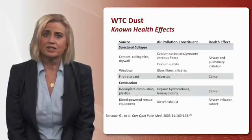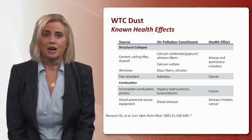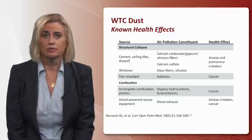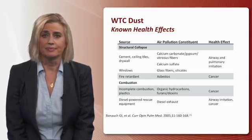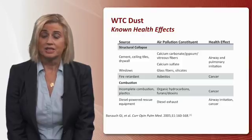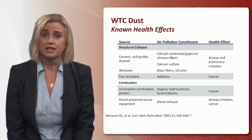The World Trade Center dust had several constituents that have led to many of the health effects we'll be discussing. There were a variety of compounds from the structural collapse — from the cement, ceiling tiles, drywall, windows, fire retardant, combustion products, and diesel-powered rescue equipment. Many of these constituents led to different compounds, such as calcium carbonate, gypsum, asbestos, glass fibers, silicates, hydrocarbons, dioxins, and diesel exhaust.